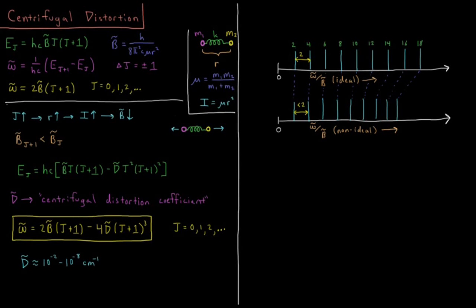In this video we'll discuss centrifugal distortion, which is another way in which the rigid rotor model can deviate from ideal behavior.